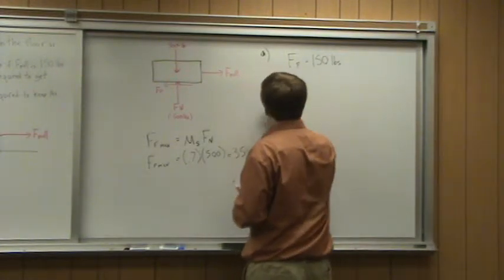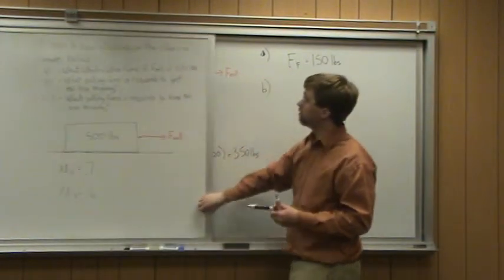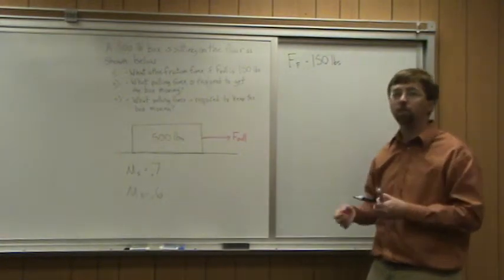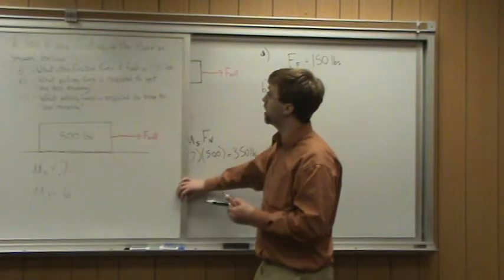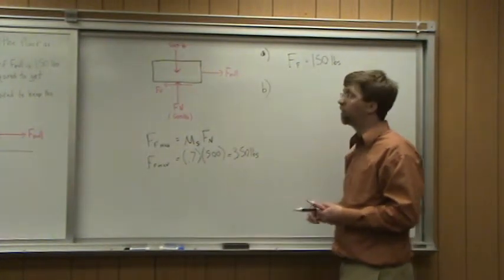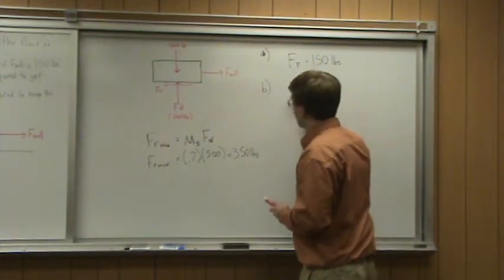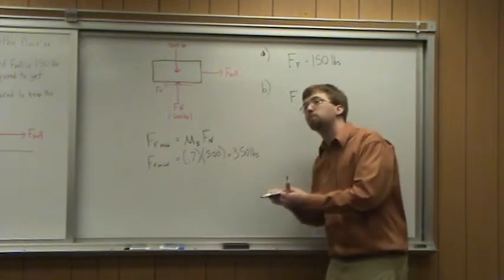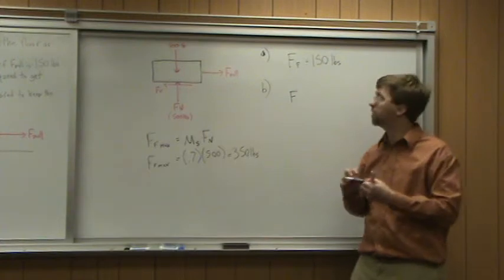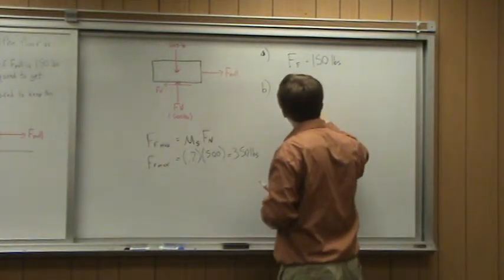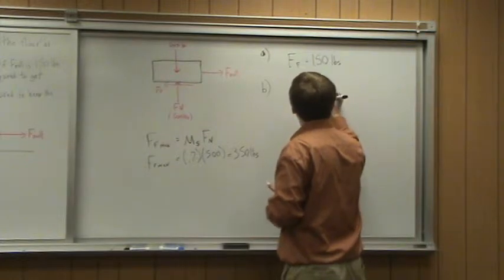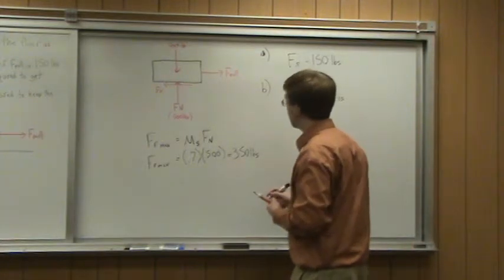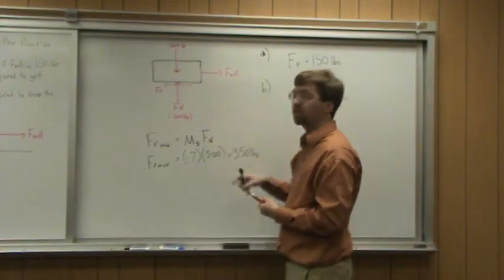Part B is asking: what is the pulling force required to get this box moving? If 150 pounds is not going to move it — we just get an equal and opposite friction force — what force is required to start it? F-pull needs to be greater than or equal to the maximum friction force before it will start moving. So F-pull is going to be equal to 350 pounds to start the box moving. That's just the static coefficient of friction times the normal force.